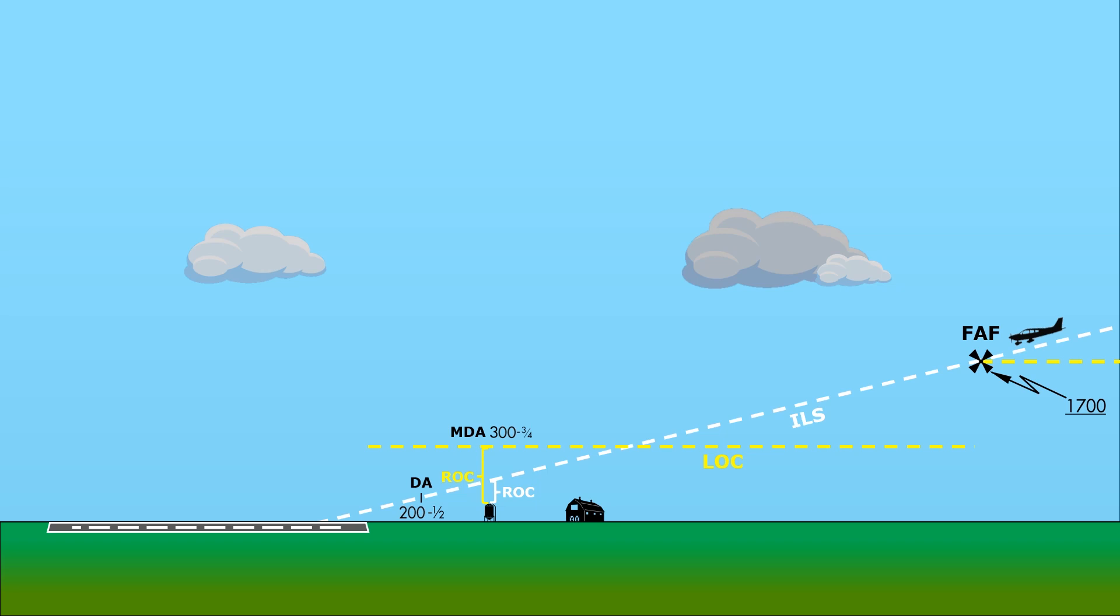Sometimes the silo can be just high enough and in just the right place where something interesting happens in the design of the approach. Let's make it a little bit taller. As you can see, neither the ILS nor LOC approach has the required obstacle clearance anymore. We'll have to change up the approach.